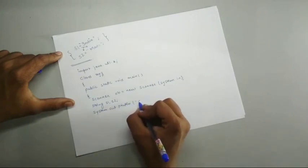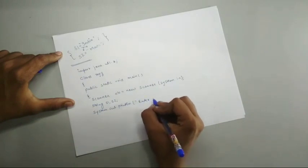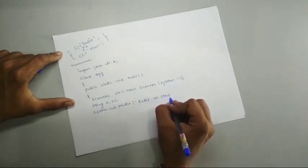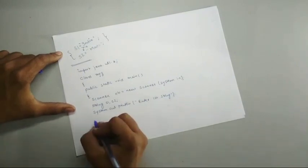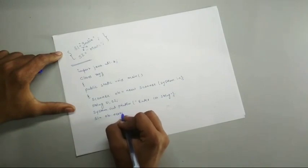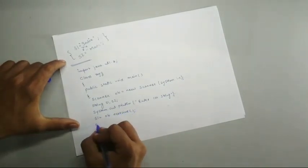We will first give the statement enter first string, you can say first string, and s1 is equal to ob dot next line for the user entry of first string.